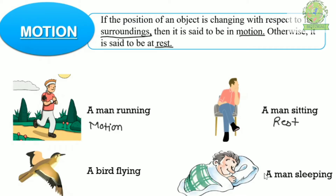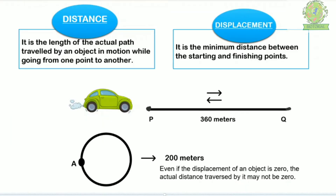Now let's move to distance and displacement. Distance is the length of the actual path traveled by an object in motion while going from one point to another — it is just the length of the path, with no direction considered. Displacement, on the other hand, is the minimum distance between the starting point and the finishing point; both endpoints are very important here.